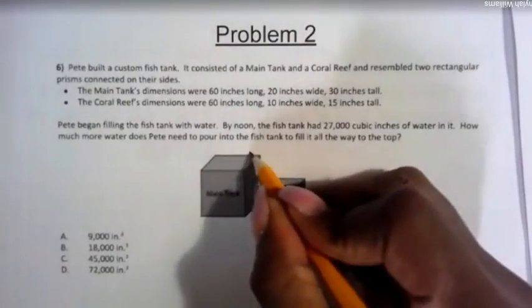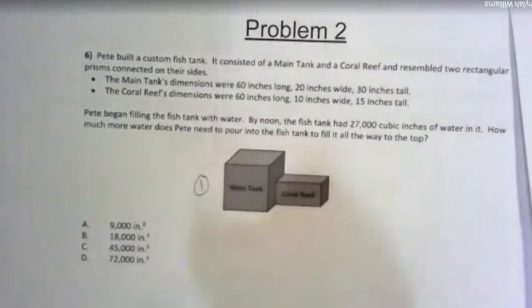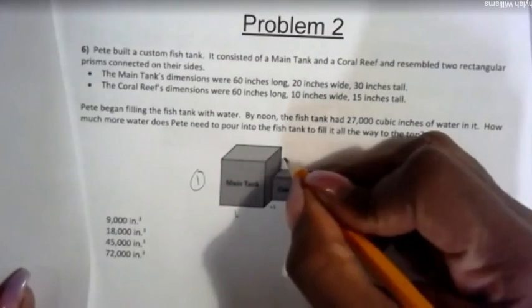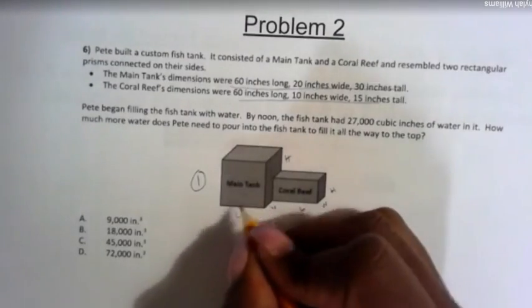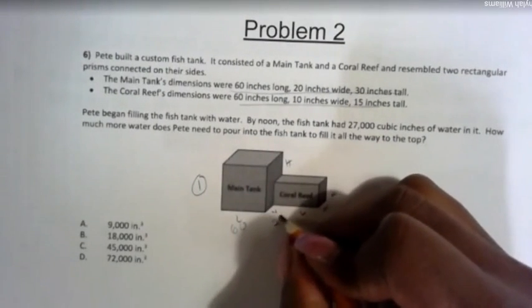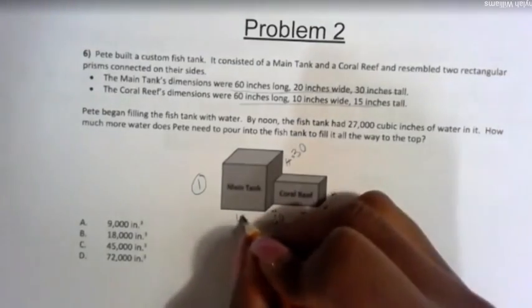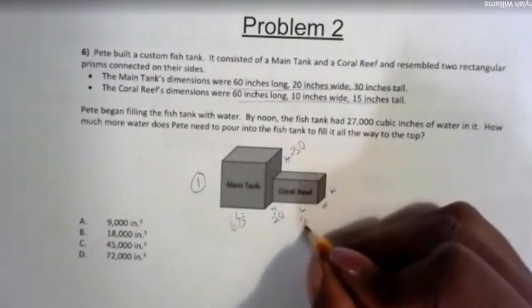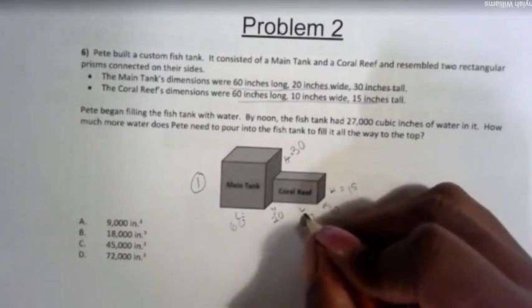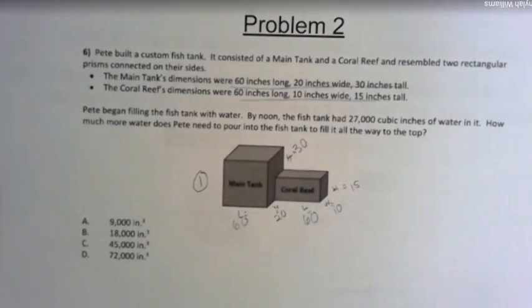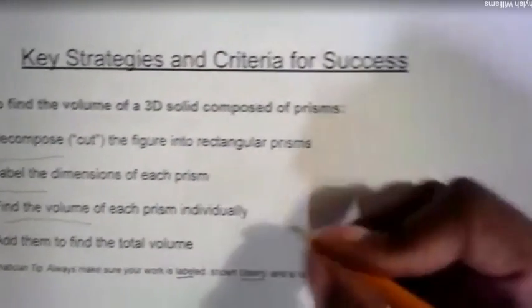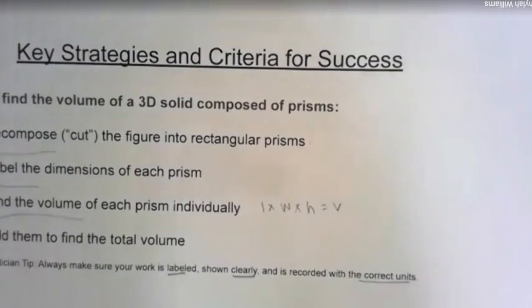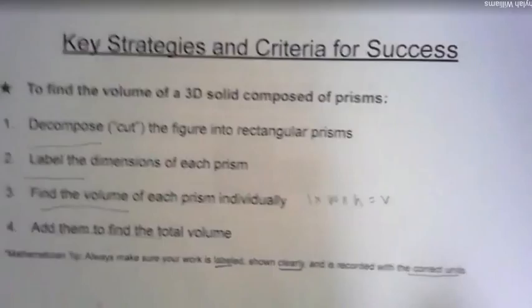Going back to our key point, to find volume, all we have to do is decompose the two prisms, which is done for us here. That was step one, decompose. Step two was to label the length, the width, and the height of each prism. That information was given to us in the problem. So the length of the main tank was 60, the width was 20, and the height was 30. Now for the coral reef, the length was 60, the width was 10, and the height was 15. Now we're going to refer back to our notes. Hopefully you've jotted down that step one was to decompose, and then step two was to label the dimensions, which we've done. And we're going to go ahead and find the volume using the formula that we know, length times width times height equals volume. When we're done finding the volume of both prisms, we'll add them together to find our total. Let's go ahead and solve.